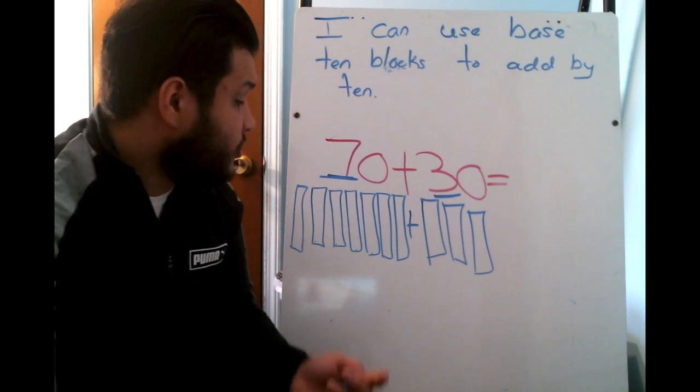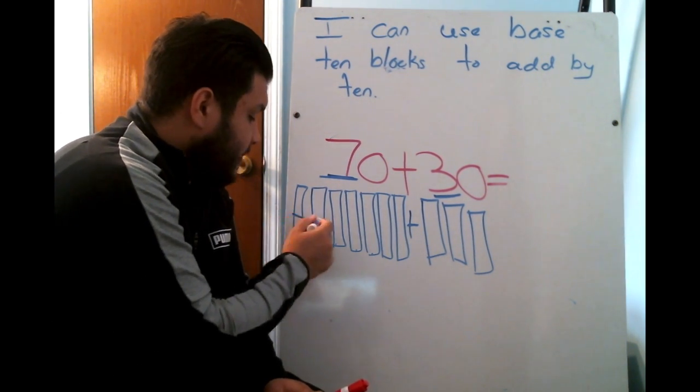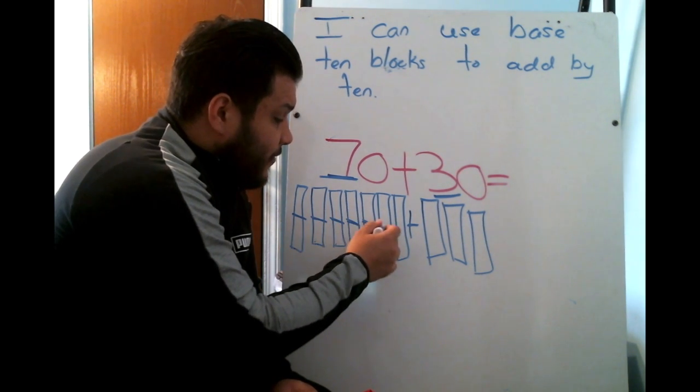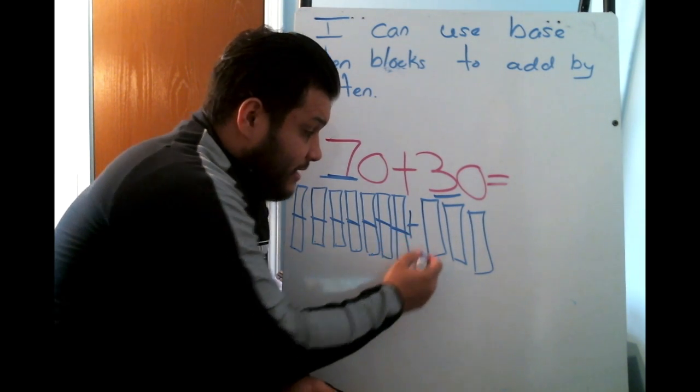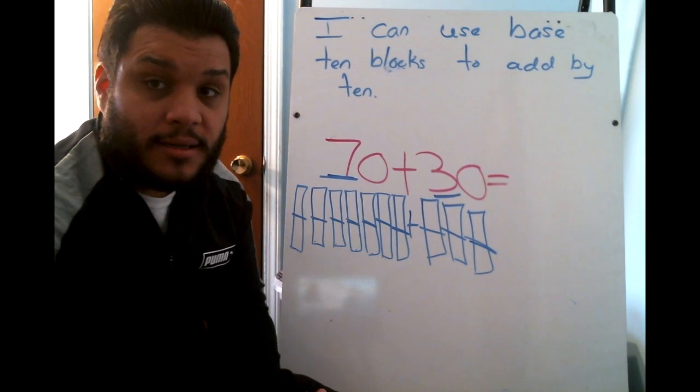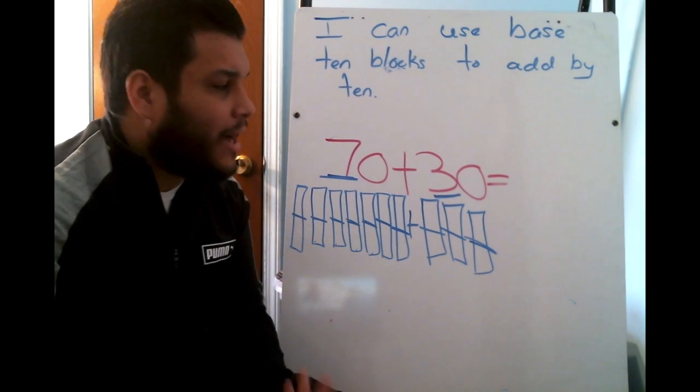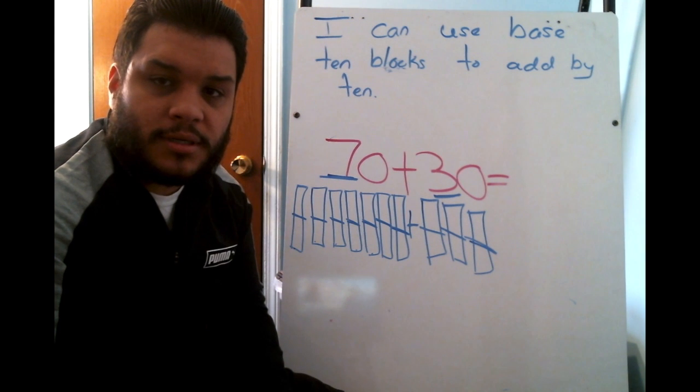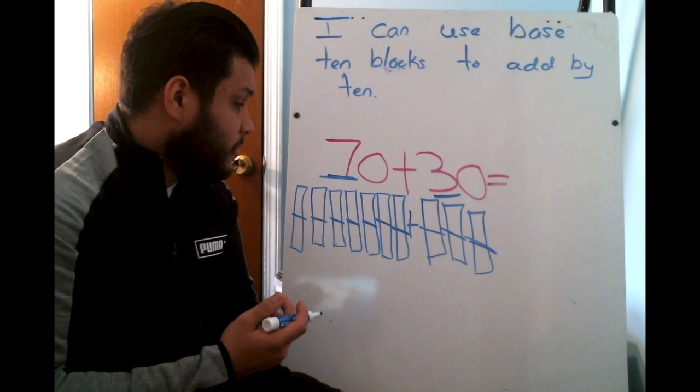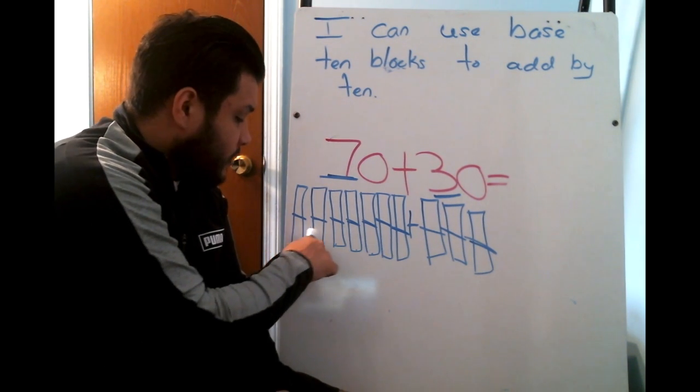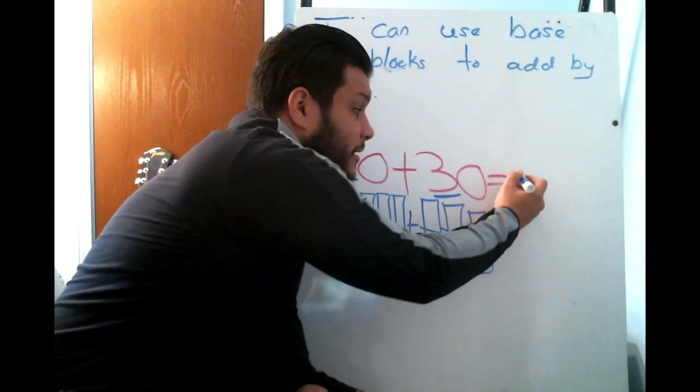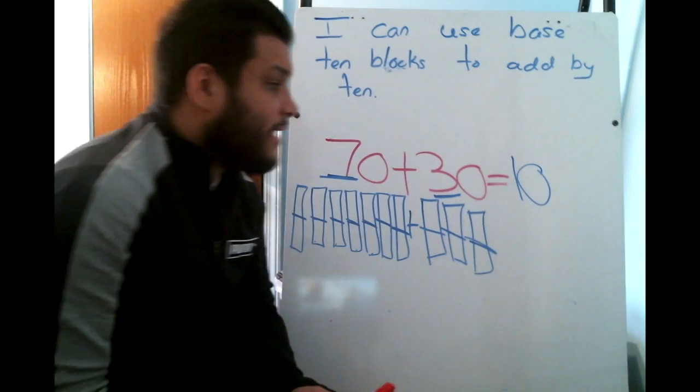Okay, the last thing that I need to do is count them all together. 10, 20, 30, 40, 50, 60, 70, 80, 90, 100. How would I write the number 100? Well, I know that 100 is how many 10s? 1, 2, 3, 4, 5, 6, 7, 8, 9, 10. 100 is 10 10s.